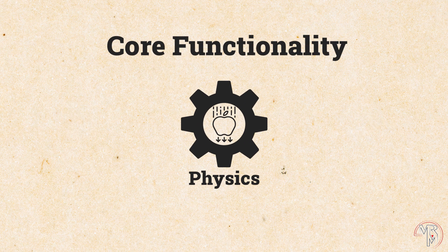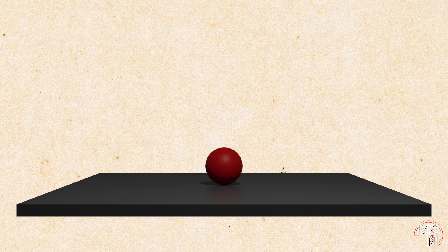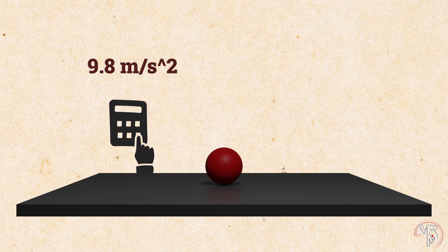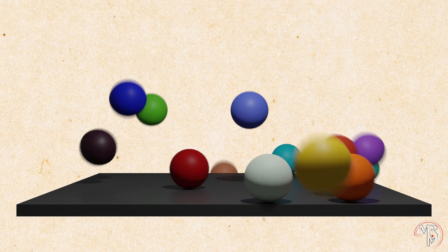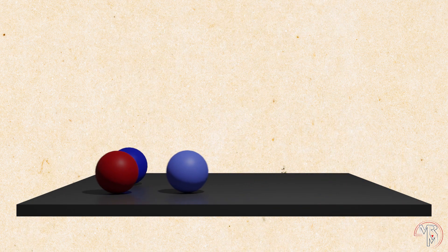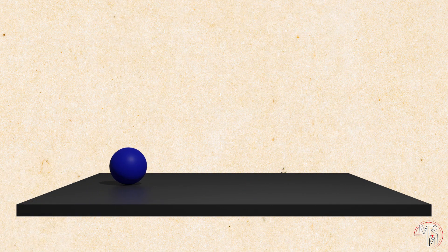Another example of what game engines do is physics simulation. If you drop an object, that object will accelerate towards the ground at 9.8 meters per second squared because of gravity. Without a game engine, we would have to do the math on our own, which isn't a big deal unless you have hundreds of objects that not just fall down, but also collide with one another. This is where game engines really help.